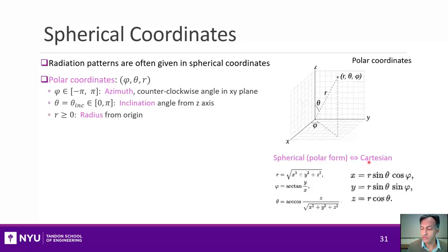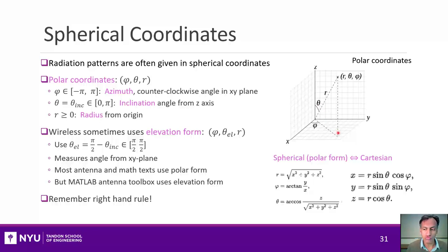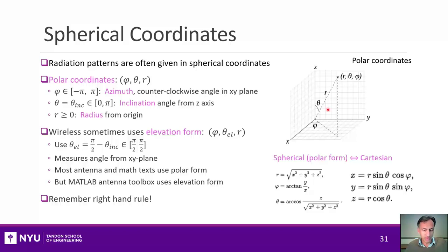You can convert from XYZ Cartesian back and forth to this spherical or polar form. Some wireless engineers use an elevation form instead, which is almost exactly the same except the vertical angle — called the elevation angle — is measured relative to the XY plane. This is geometrically easier since usually the antenna and receiver are at roughly the same height, making elevation angle zero the natural reference. A positive angle means the antenna is tilted upward, say from a ground base station to an aircraft; a negative angle means it's tilted downward.